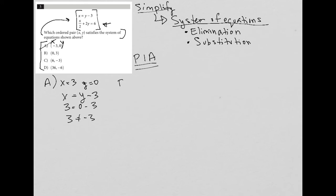Choice B says x = 0 and y = 3. Let's try that. Is it true that x = y - 3? In this case, 0 = 3 - 3. That is true. Now let's check the other equation.